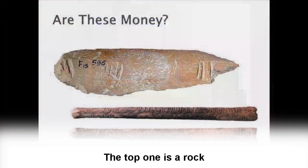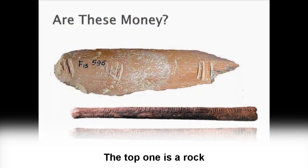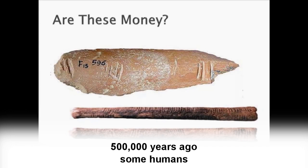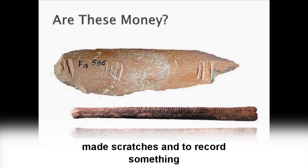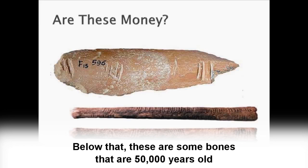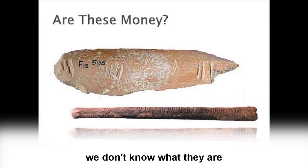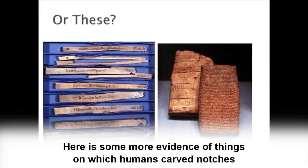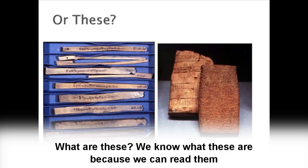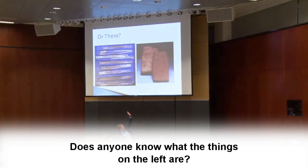Are these things money? The top one is a rock — 500,000 years ago some humans made scratches into it to record something; we don't know what. Below that, these are bones that are 50,000 years old; humans carved more complicated marks into these to record something; we don't know what. Here is more evidence of things on which humans carved notches. What are these? We can read them. Does anyone know what the things on the left are?